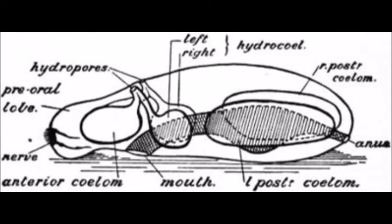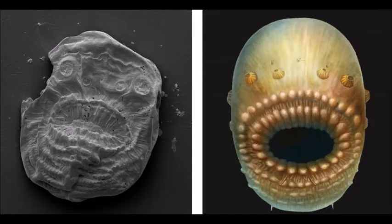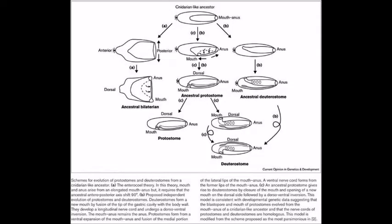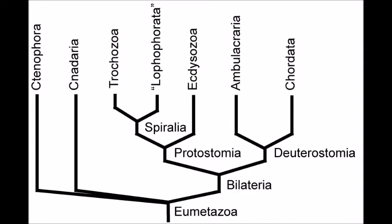The ciliated, bilaterally symmetrical dipleurula larvae of echinoderms is hypothesized to have been the ancestor of all deuterostomes. And recently, a very early bag-like Cambrian deuterostome was discovered named Saccorhytus. The ancestor of all deuterostomes was probably a worm-like, bilaterally symmetrical animal, though. We share a common ancestor with protostomes at 560 million years ago, finally pushing us into the Precambrian.